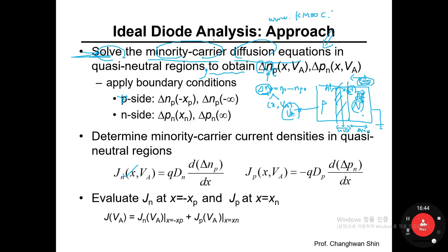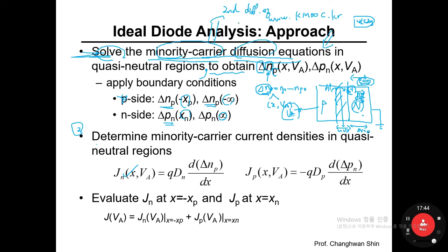In the KMOOC search results you will find my name, and around week five or six there are movie clips covering the minority carrier diffusion equation and continuity equation — about 15 minutes each. Step two uses the boundary conditions from the solved excess carrier concentrations. Since the minority carrier diffusion equation is a second-order differential equation, boundary conditions are necessary to solve it.